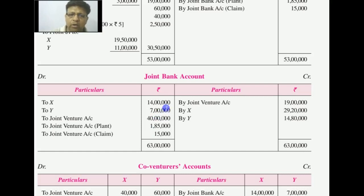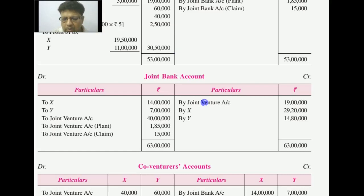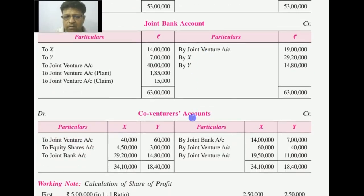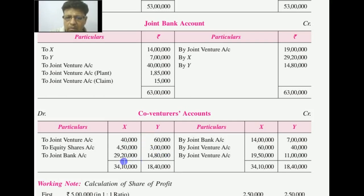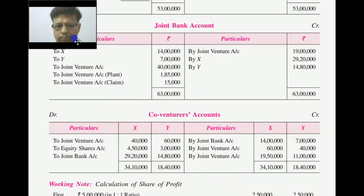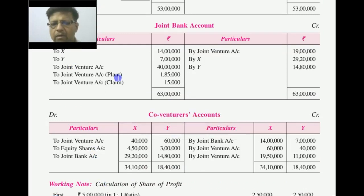The joint bank contribution was Rs. 21,000,000 in the ratio of 2:1. In the joint venture account, we do reverse posting of all entries. After preparing this account, we have the final income. This completes our first method of preparing the joint venture account.